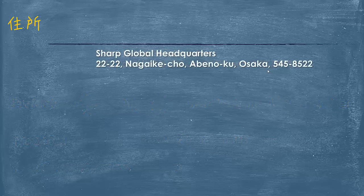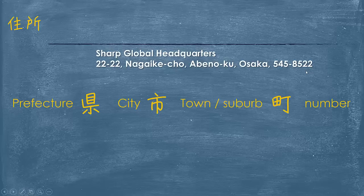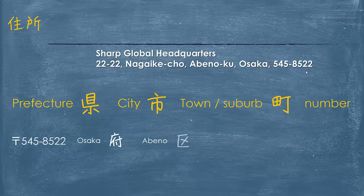It's the same for Osaka, but as we heard just before, Osaka is an urban prefecture, so it has a slightly different naming system. Sharp's global headquarters is located at this address, written in English and in Japanese, following that same large-to-small pattern. The yubin, then Osaka-fu, Abeno-ku, Nagai-ke-cho, and then the number.